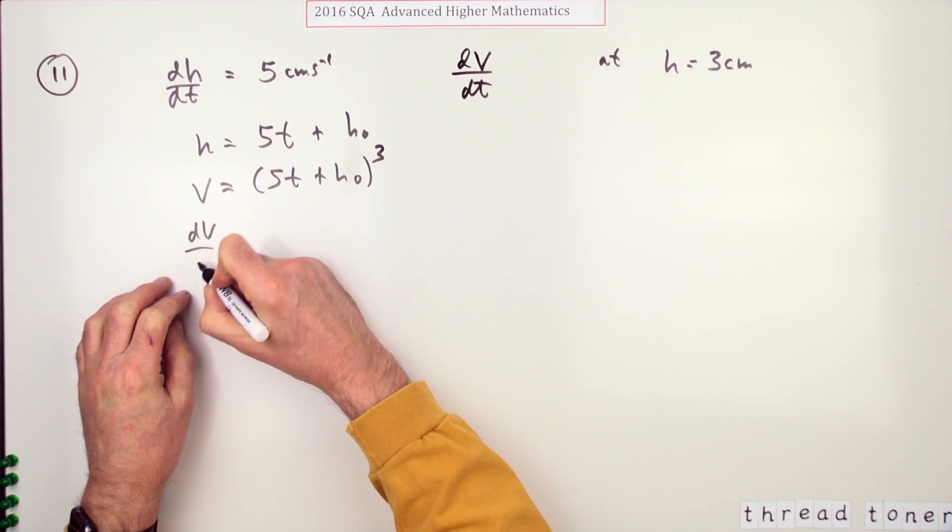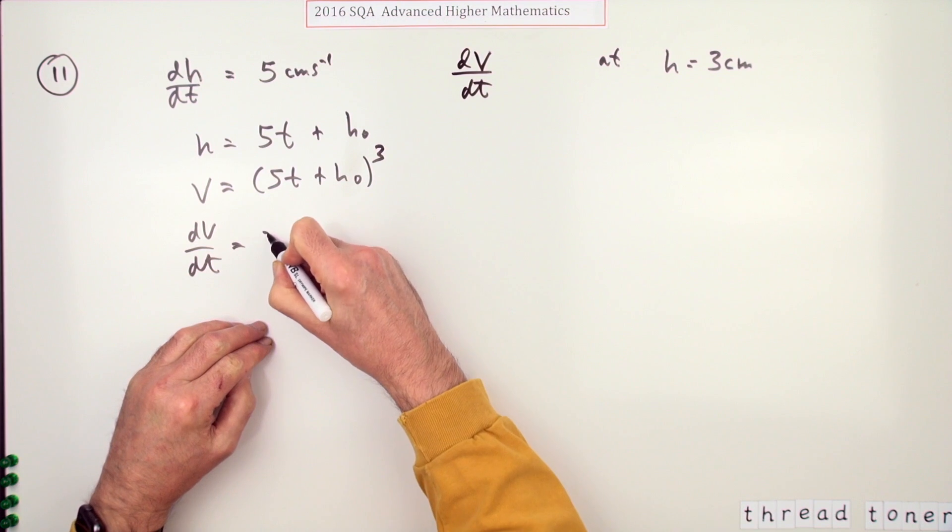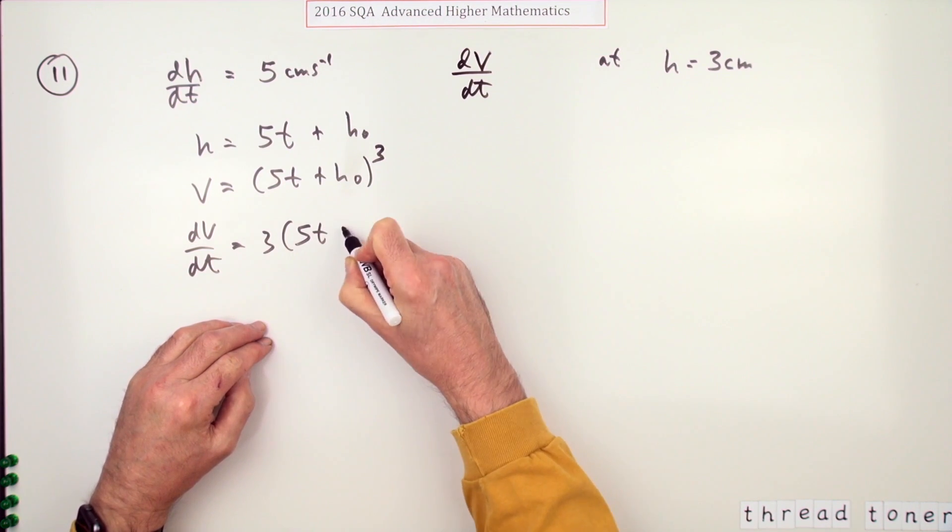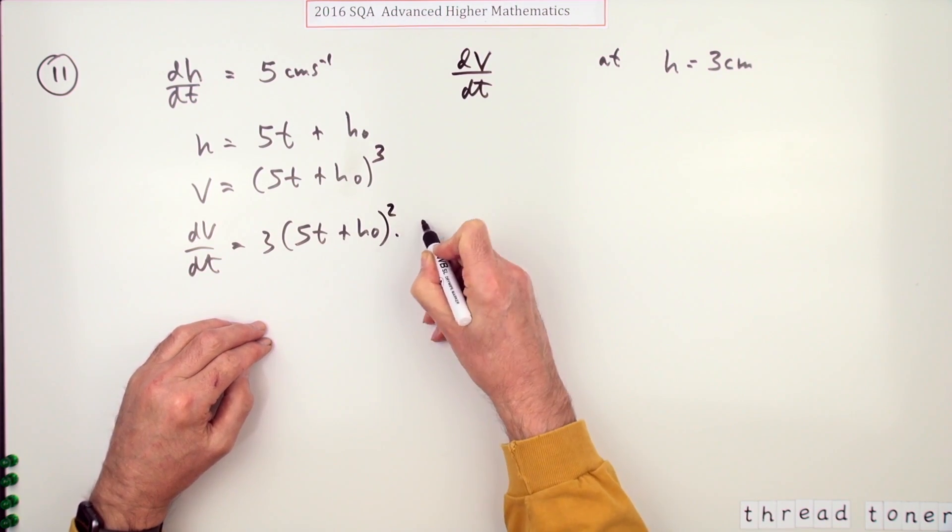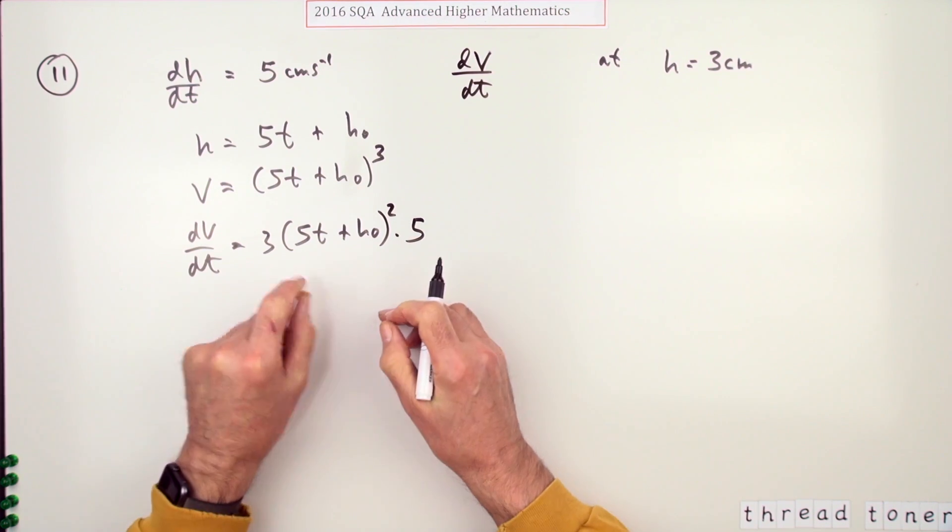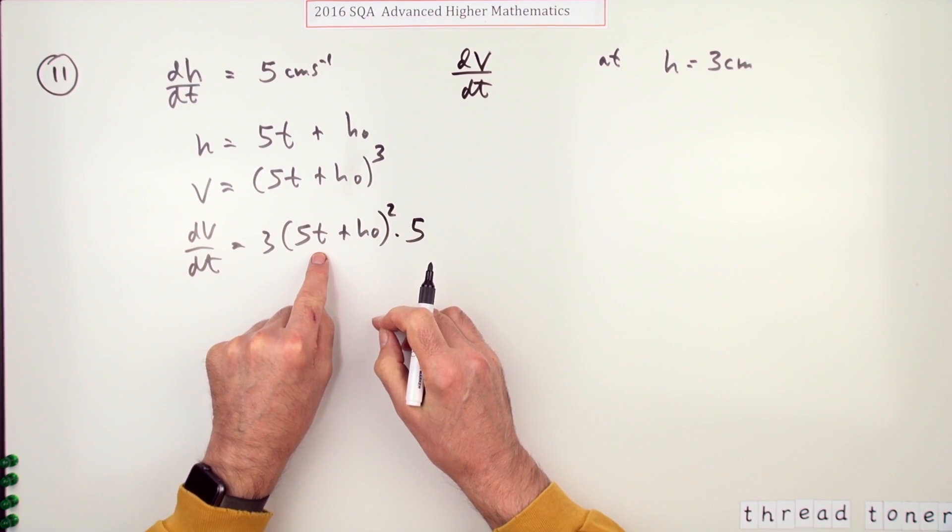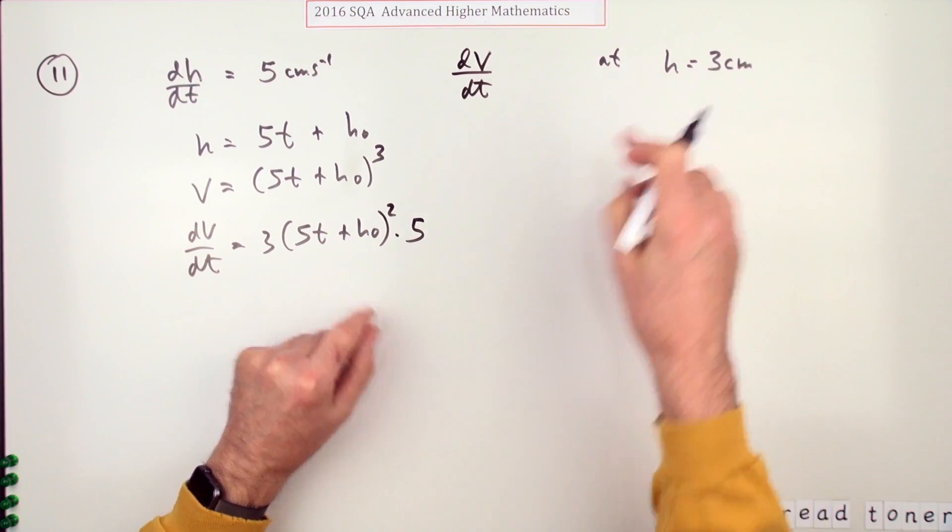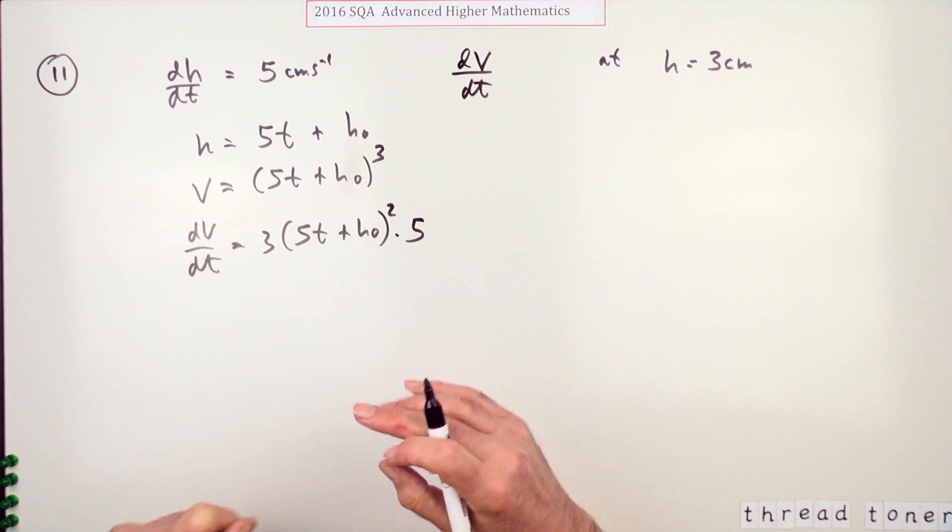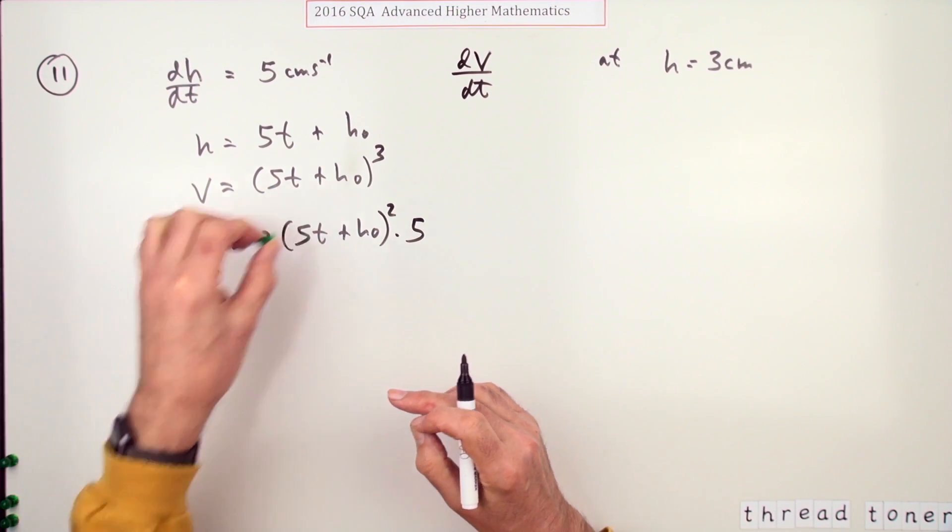In which case, dV/dt would be 3 times (5t + h₀)² times 5, because now I've got to figure out what the time was when the height got to three centimeters. But so far, that should have been the first mark, that should have been the second mark.